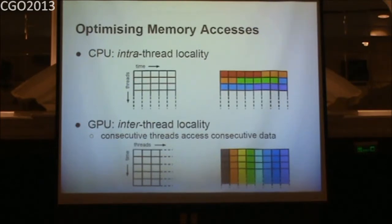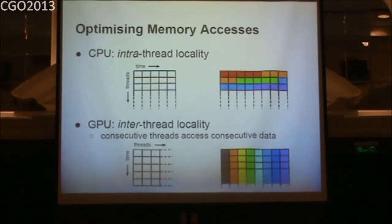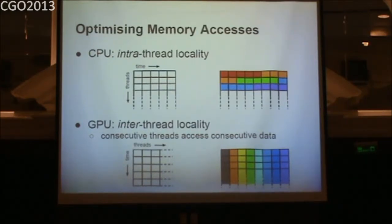One important aspect is optimizing for memory accesses. When you have an OpenMP program it's often optimized for the CPU, which wants intra-thread locality — when the CPU loads one element, it loads the whole cache line, so the next element is already in cache. On the GPU, you want the opposite: inter-thread locality, where consecutive threads access consecutive data.